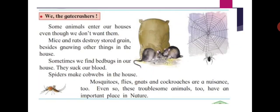Some animals enter our houses even though we don't want them. Mice and rats destroy stored grain besides gnawing other things in the house. Sometimes we find bedbugs in our house — they suck blood. Spiders make webs in the house. Mosquitoes, flies, gnats, and cockroaches are a nuisance too. Even so, these troublesome animals have an important place in nature.